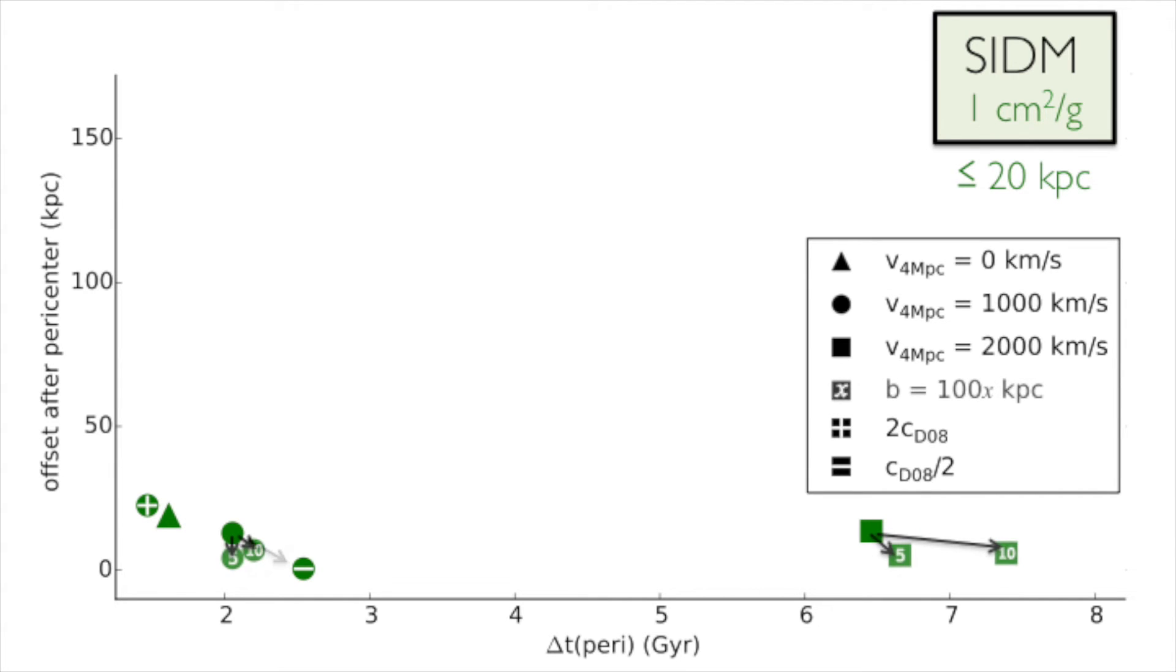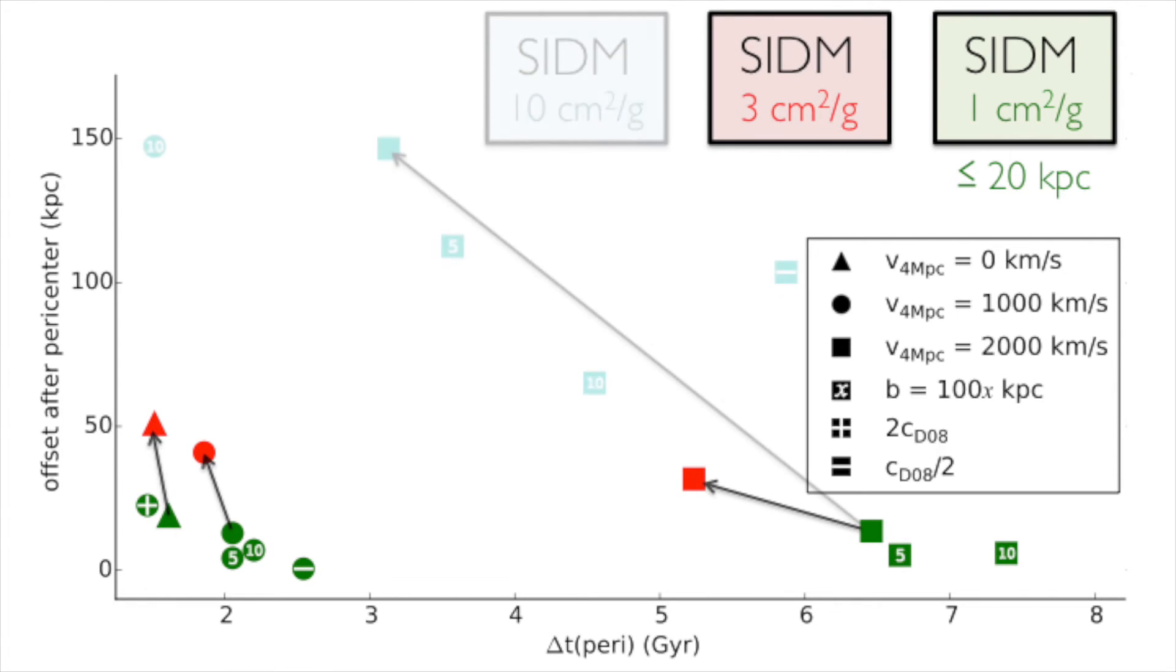At higher cross-sections, offsets are larger and form across a larger range of merger conditions. For a cross-section of 3 cm² per gram, the largest offsets are about 50 kiloparsecs. At a cross-section of 10 cm² per gram, halos coalesce upon contact unless the merger velocity is unusually high.